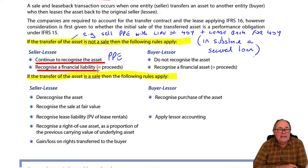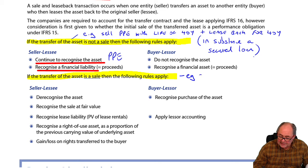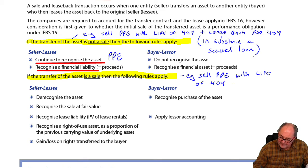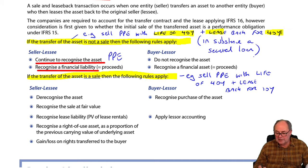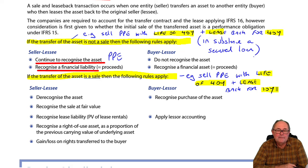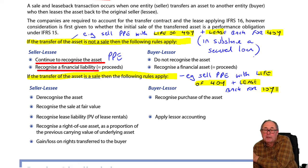Where it gets messy is if you determine that actually there was a sale. An example of that would be to sell PPE with a life of 40 years and then lease it back for 10 years. Then it is no longer your problem after 10 years. The first one: life was 40, lease was 40. This time: life is 40, lease is 10. For the last 30 years of its life, it's someone else's problem.